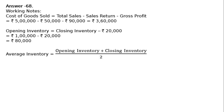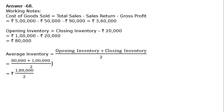Next, average inventory is equal to opening inventory plus closing inventory divided by 2. Here, opening inventory is Rs. 80,000 plus closing inventory is Rs. 1 lakh, whole divided by 2. That is equal to 1 lakh 80,000 by 2, that is equal to Rs. 90,000.